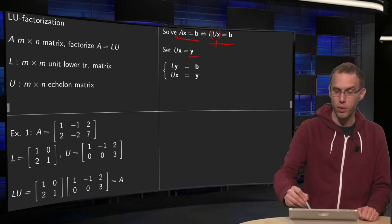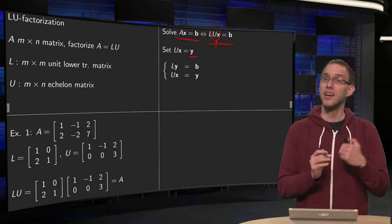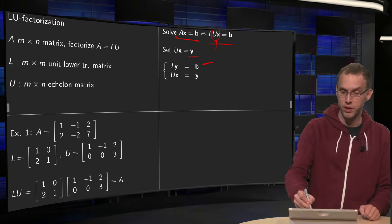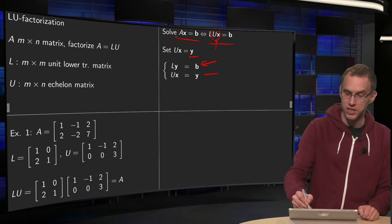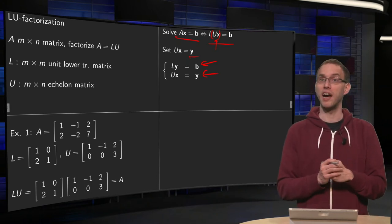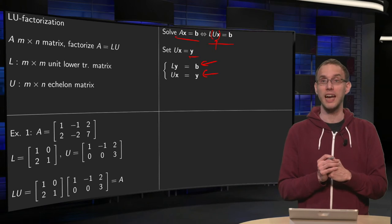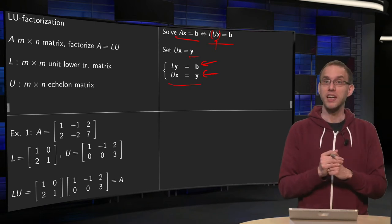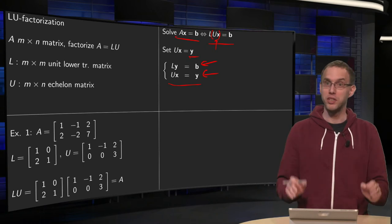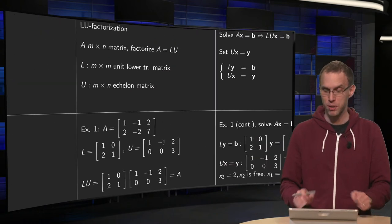Then over here we have Ly equals b. Then we first are going to solve Ly equals b. And then we have y, and then in the second step we are going to solve Ux equals y. And that gives us our vector x. And now those two separate steps are very easy due to the special forms of L and U, as you will see in this explicit example over here.